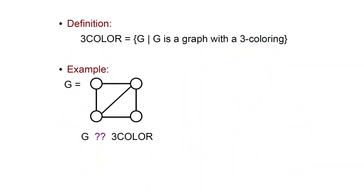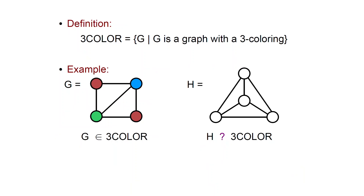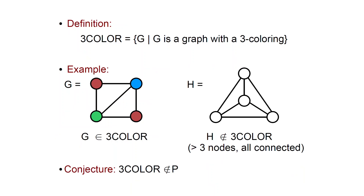Here is an example: can this graph be 3-Colored? The answer is yes — you can put the colors such that the only two nodes with the same color are not connected. What about graph H? That graph cannot be 3-Colored because it consists of 4 nodes all of which are connected, so some two nodes will have the same color but every two nodes are connected, which is not valid.